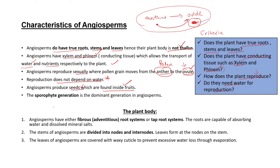The last point is that the sporophyte generation is the dominant generation in angiosperms. The sporophyte generation involves a spore that is produced and is able to produce a new plant. In angiosperms, pollen is equivalent to the spore — it is produced by the anther and moves to the ovule. When we say the sporophyte generation is dominant, it means most angiosperms reproduce through pollen grains moving from the anther to the ovule.